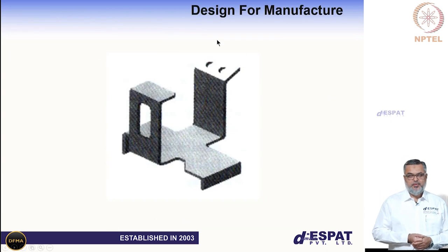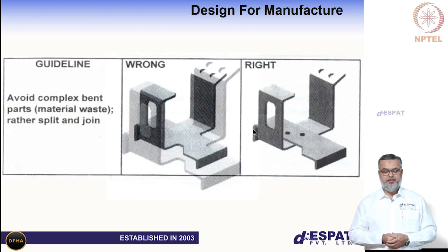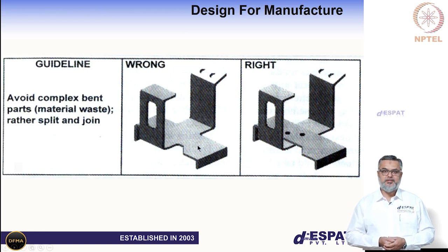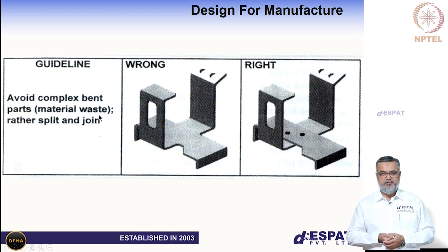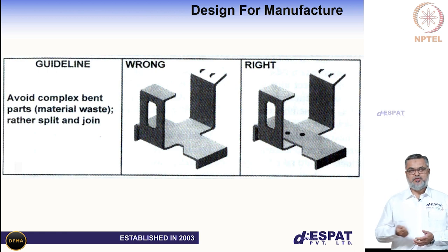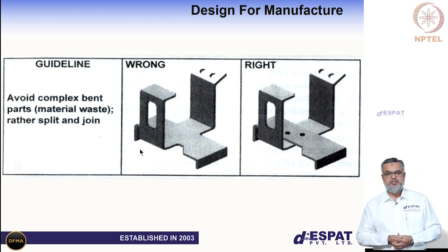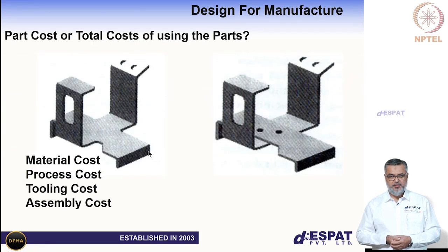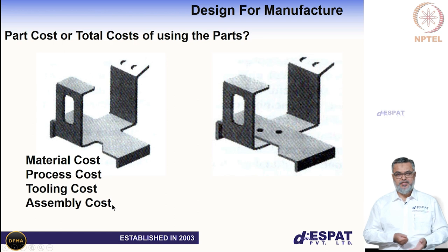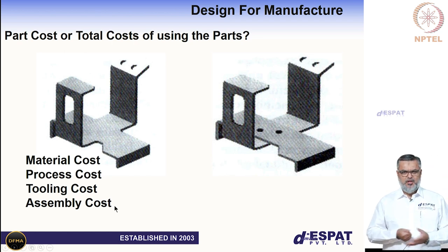The other module is called Design for Manufacture. To explain it, I've taken a simple sheet metal component example. Say a company needs to make 10,000 parts. Looking at sheet metal design guidelines, it is a bad idea to have complex bent parts — simpler parts save material. The right design is shown on the right side of the screen, while the left design is not ideal because it wastes material from the blank. Comparing these two designs measures the contribution of material, process, setup, tooling, and rejection to determine the most economical component.